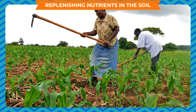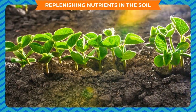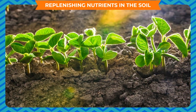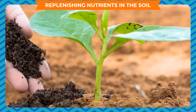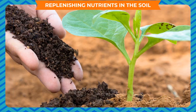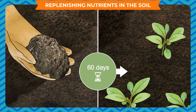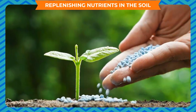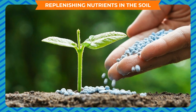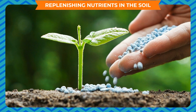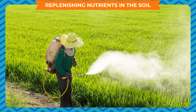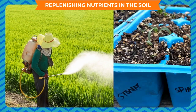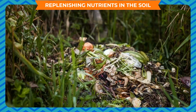Replenishing nutrients in the soil: plants absorb minerals and nutrients from the soil for their growth and development, so their amounts keep declining. These nutrients need to be added from time to time. Soil nutrients can be replenished by applying fertilizers and manures, which contain plant nutrients like nitrogen, potassium, and phosphorus. Compost — organic waste made from the decomposition of biodegradable waste by microorganisms — can also be added to the soil to restore nutrients and increase soil fertility.